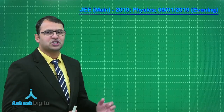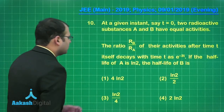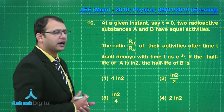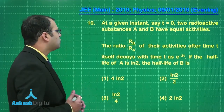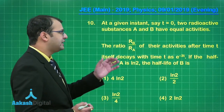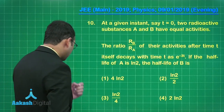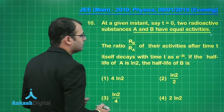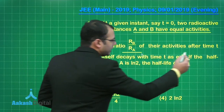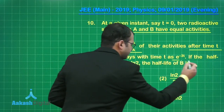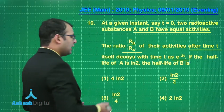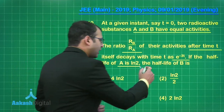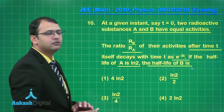Let's start with question number 10. This question belongs to the section of modern physics, topic radioactivity. As per the question, at a given instant t equals to 0, there are two radioactive samples A and B which have equal activities. The ratio of their activity after time t is e to the power minus 3t. If the half-life of A is given as natural log of 2, we have to find the half-life of B.